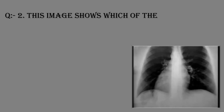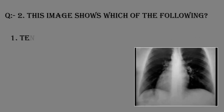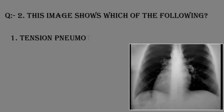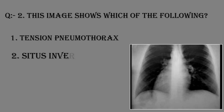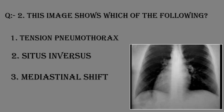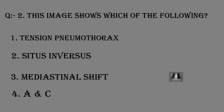Question number two: The image shows which of the following? Option one: Tension pneumothorax. Option two: Situs inversus. Option three: Mediastinal shift. Option four: A and C.